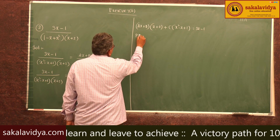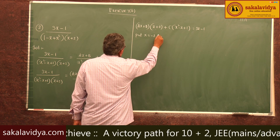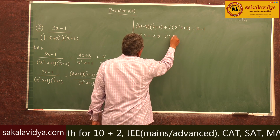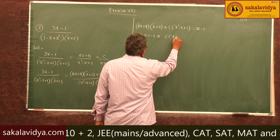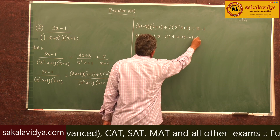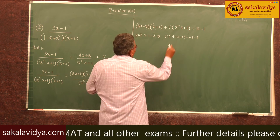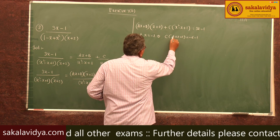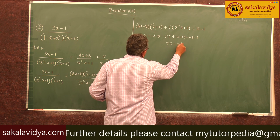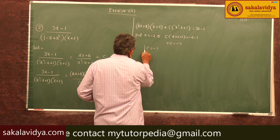Put x = -2 so that (x + 2) becomes 0. Then C(4 + 2 + 1) = 3(-2) - 1, giving 7C = -7, so C = -1.